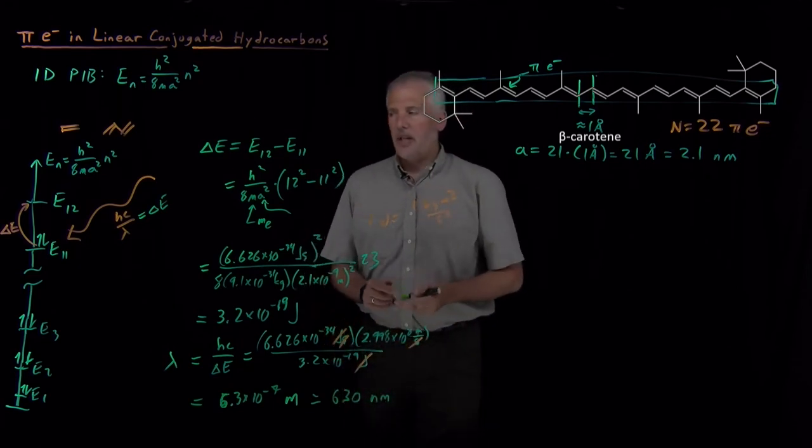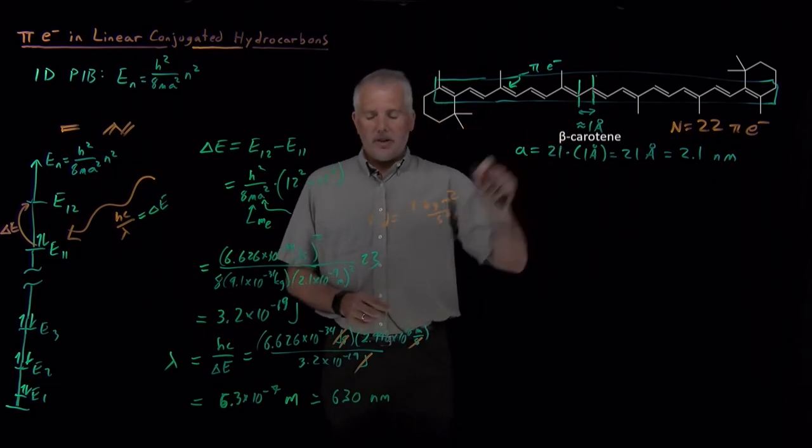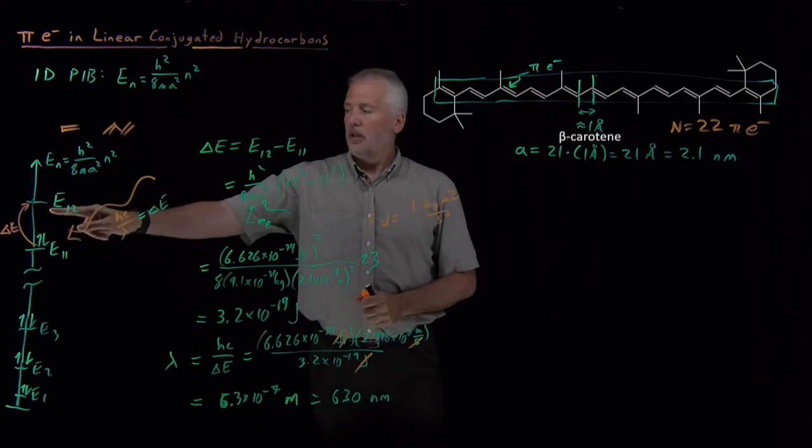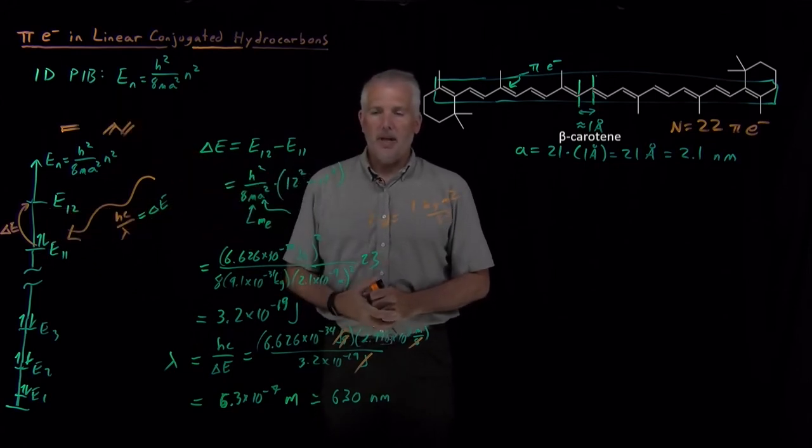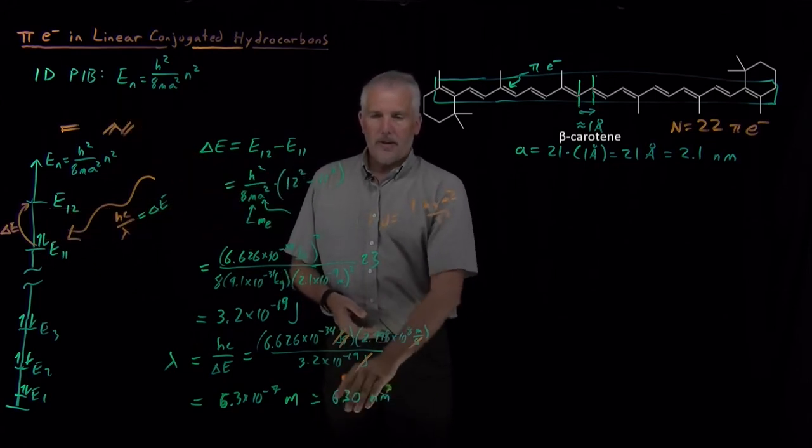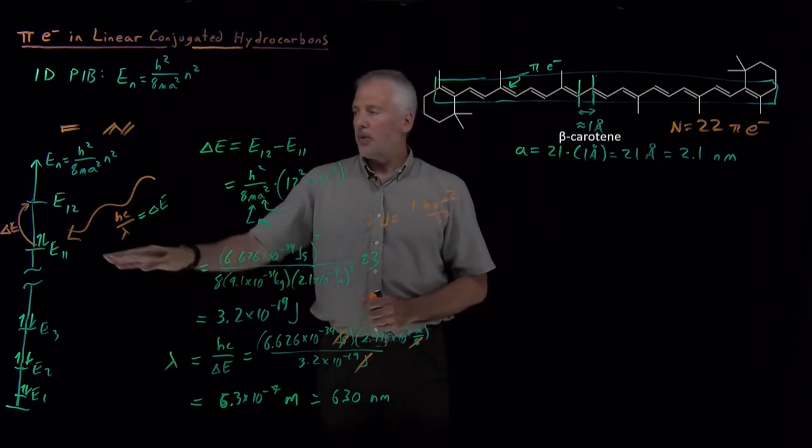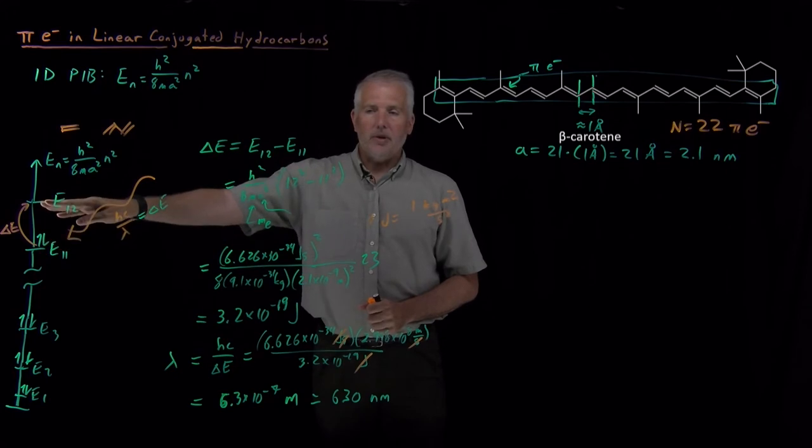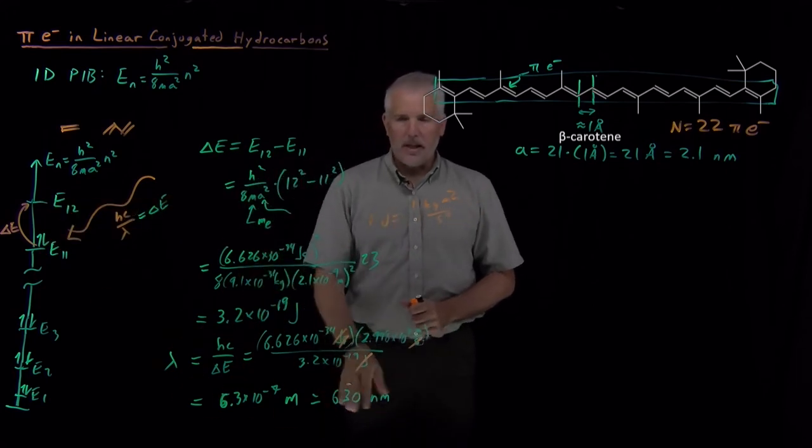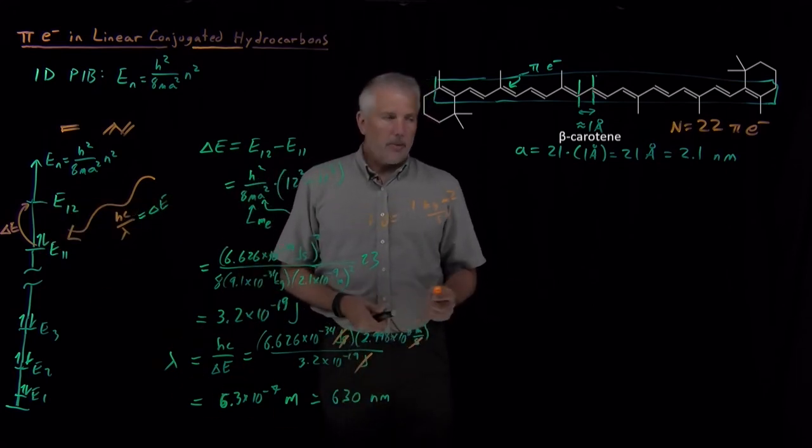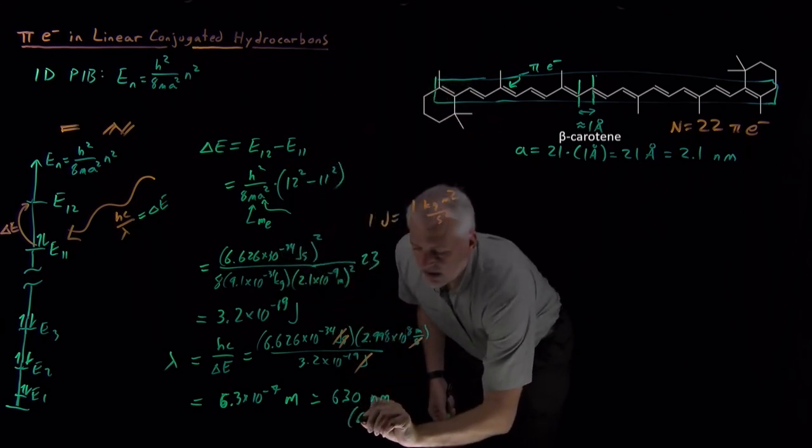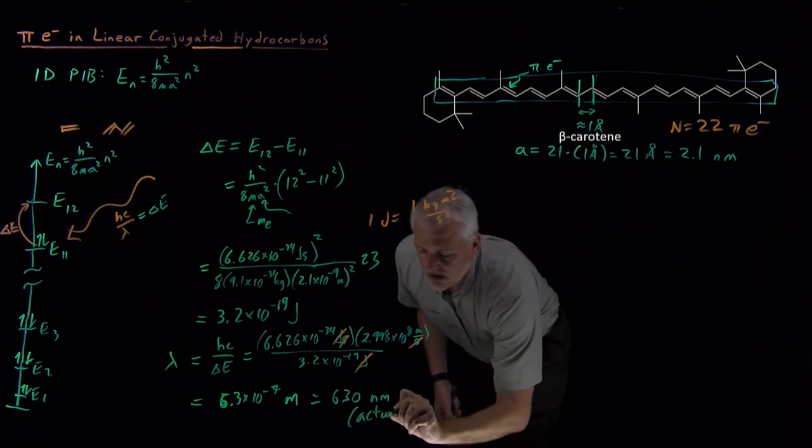So our prediction is the beta carotene molecule, since it has electrons in its 11th level, but not the 12th level if it behaves as a particle in a box. Light of wavelength 630 nanometers is required to lift those pi electrons from the 11th level up to the 12th level. So we predict that it absorbs light at 630 nanometers. That light, well, let me point out now, that answer is not 100% correct.